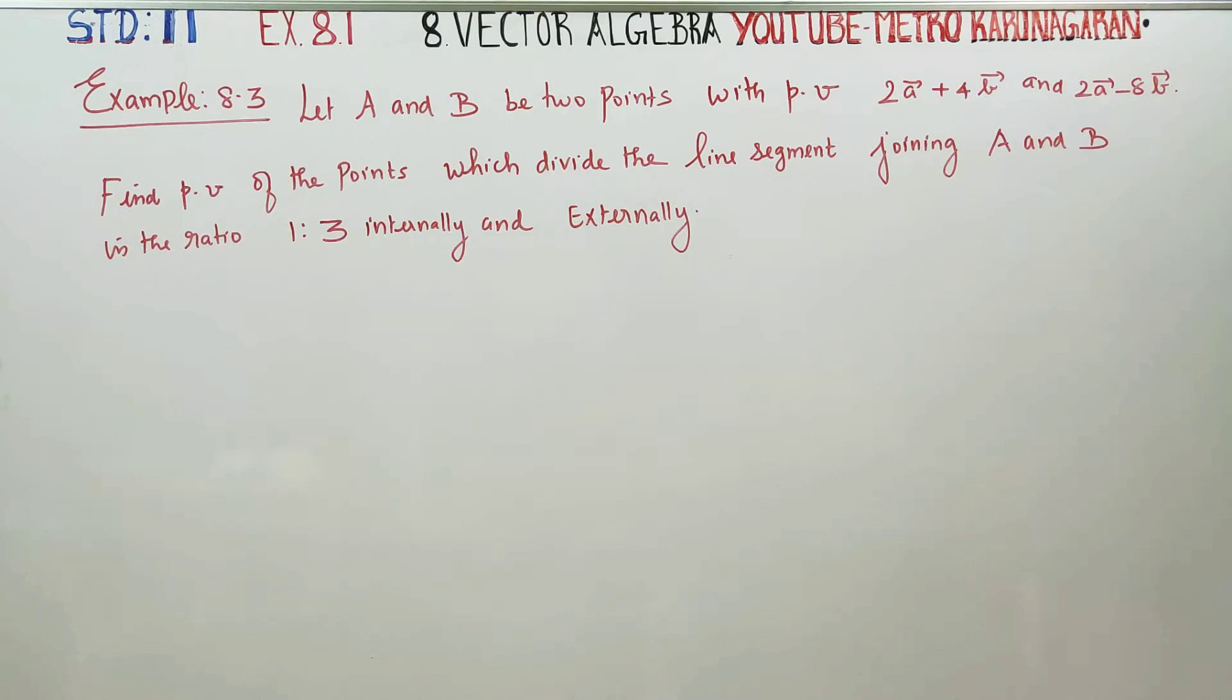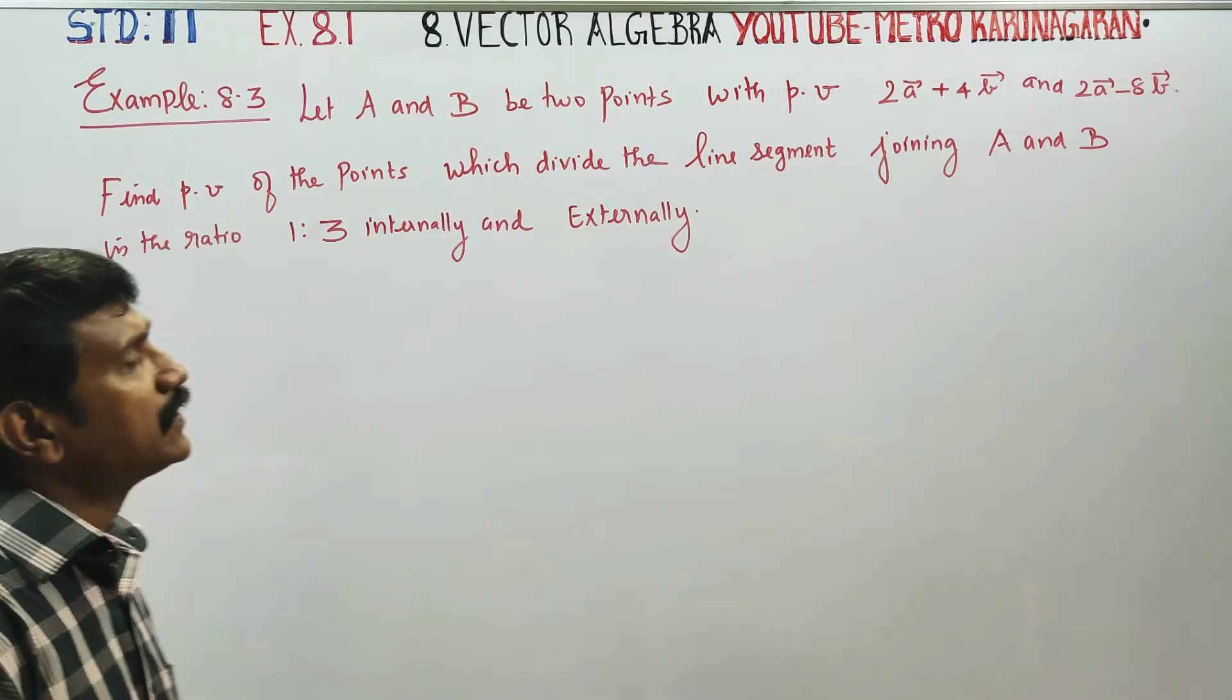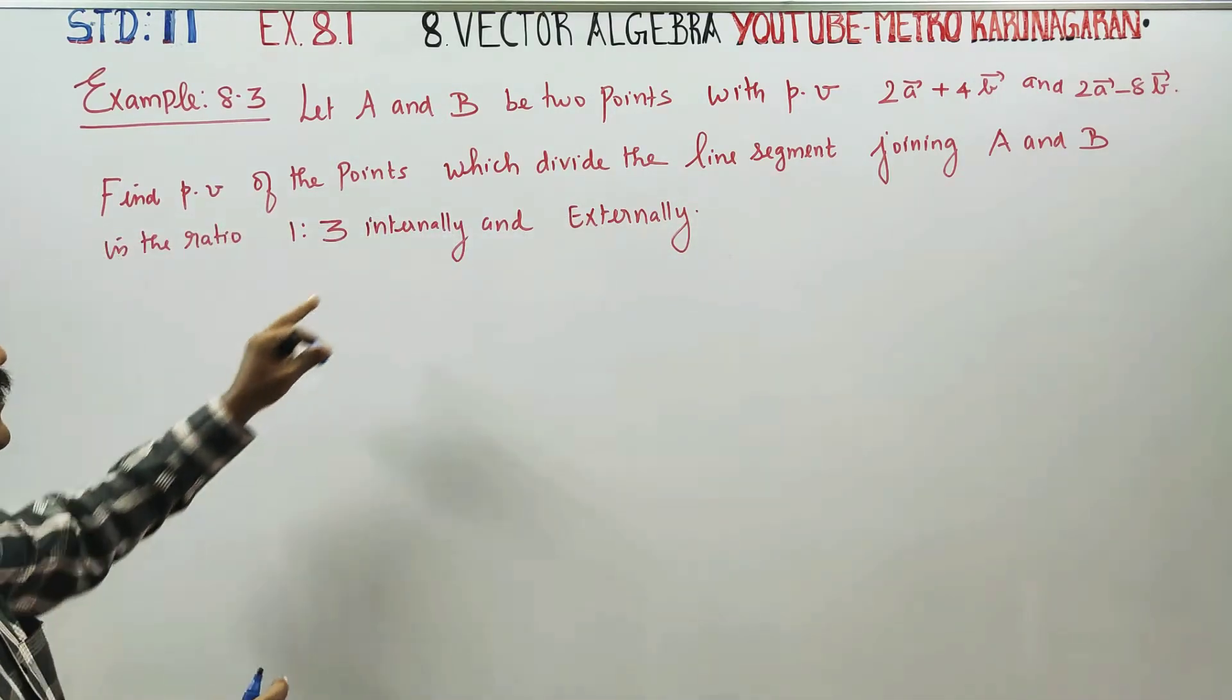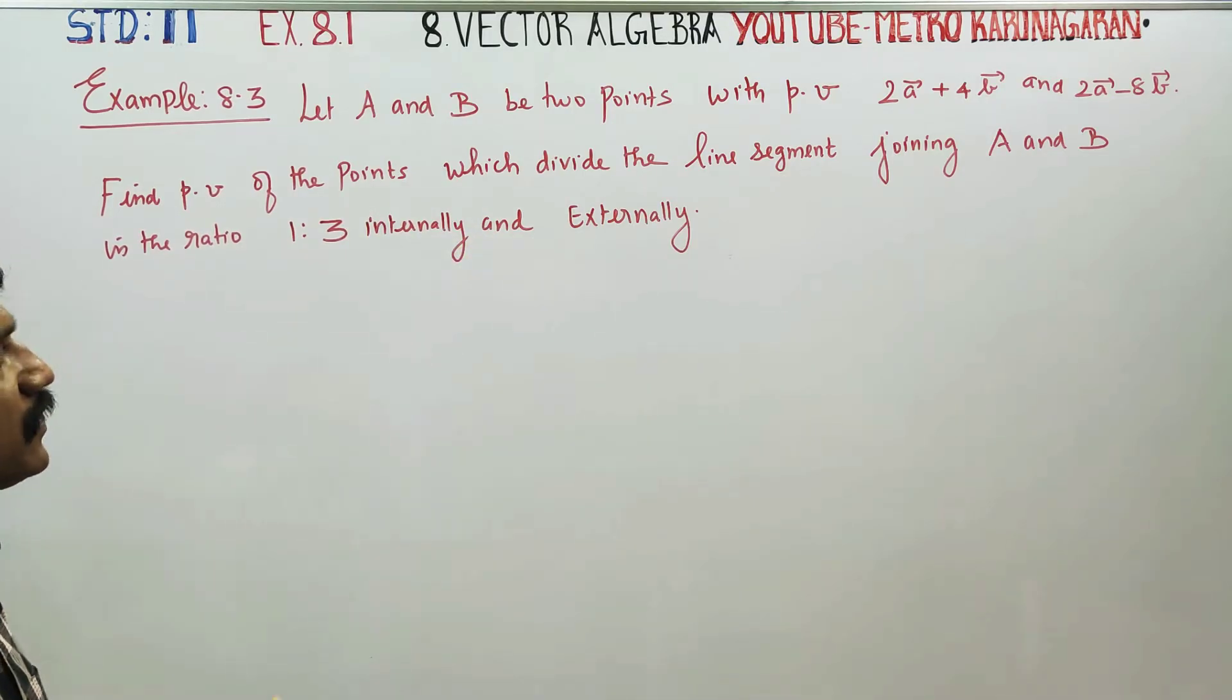Hello 11th Standard Students, I am Metro Karanagaran. In Example 8.3, let A and B be two points with position vectors. Find the position vector of the point which divides the line segment joining A, B in the ratio 1 is to 3, internally and externally.